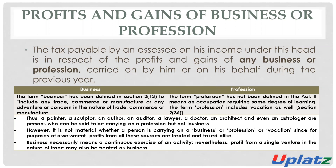For example, if there is a painter who is doing painting, it will be known as business — or rather, he is a professional, so it will be considered as profession. So business includes trade, commerce, manufacturing, or any adventure or concern in the nature of trade, commerce, or manufacturing.